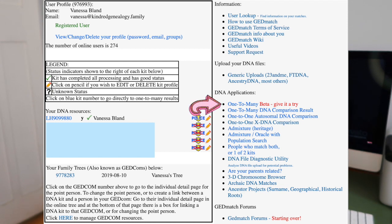First, the one-to-many tool. You'll notice that there's both a beta version and also just a DNA comparison. They're both the same tool — the DNA comparison is the more original one, the beta version gives you more flexibility and allows you to change parameters. I recommend using the beta one, but all in all they're the same.